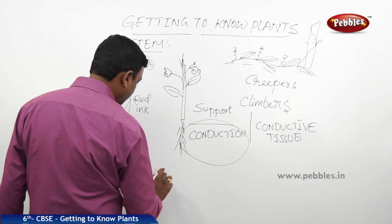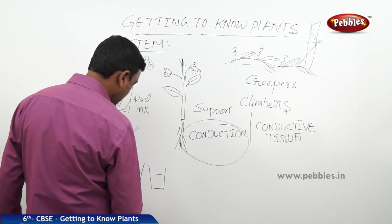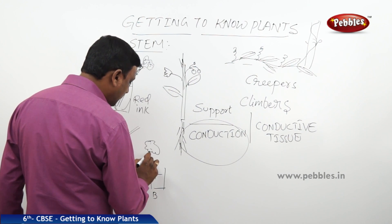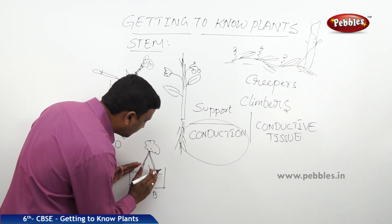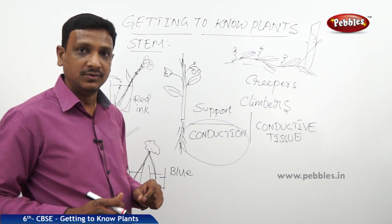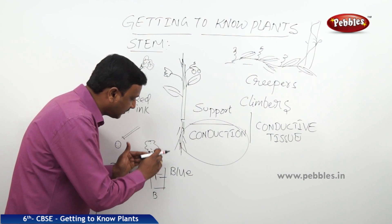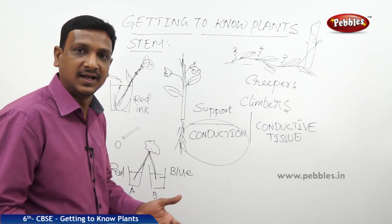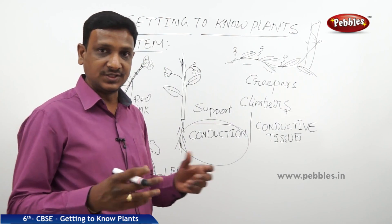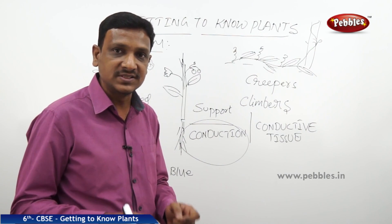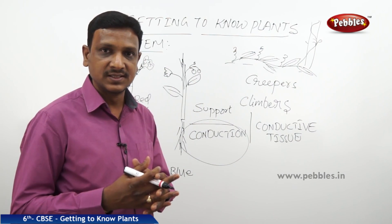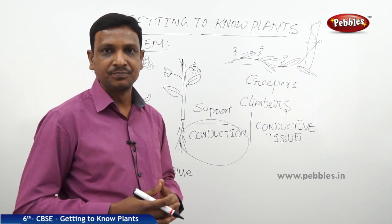You can also do the same experiment with two glasses, A and B. Take a flower with a stem and split the stem into two halves. Place one half in glass A with red ink and the other in glass B with blue ink. After some time, both halves conduct their respective colors to the flower, so both red and blue colors appear in the flower. This confirms that the stem conducts water through special vessels.